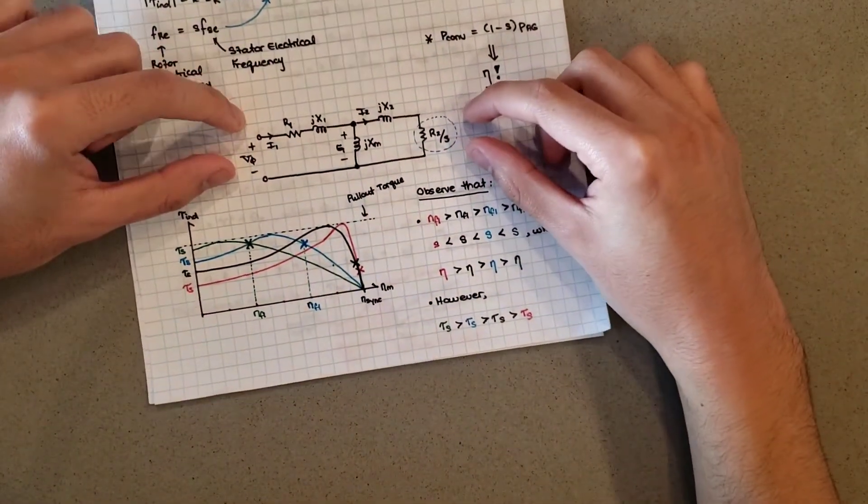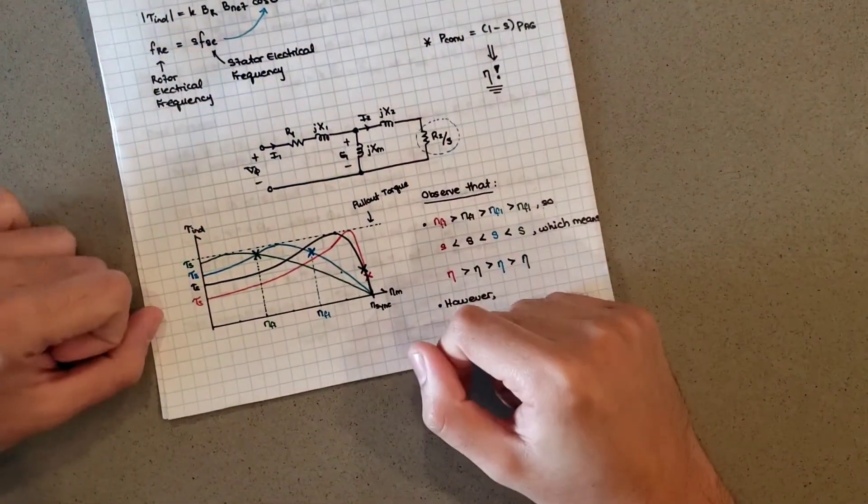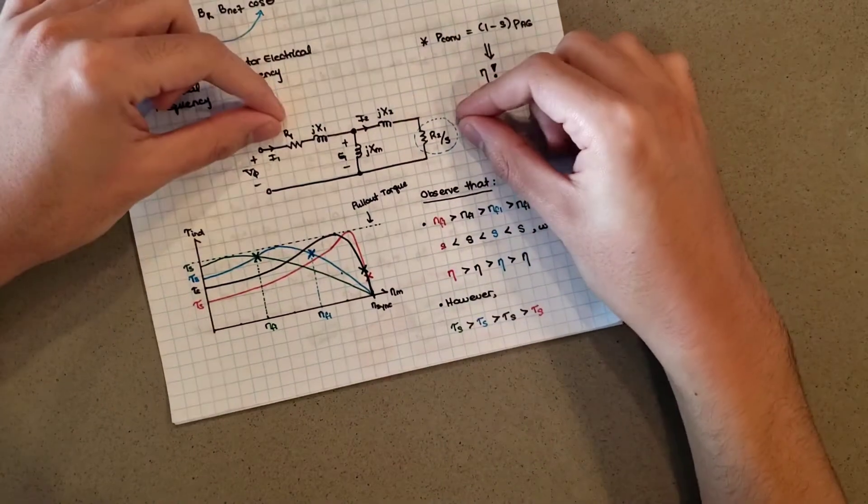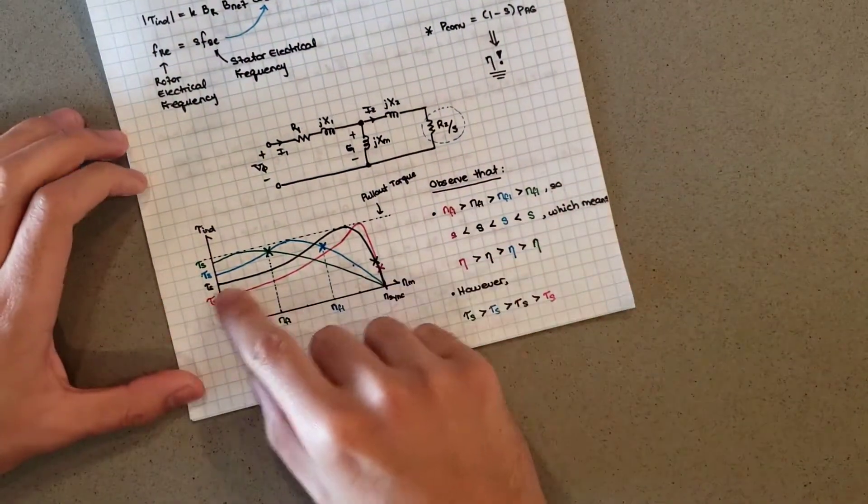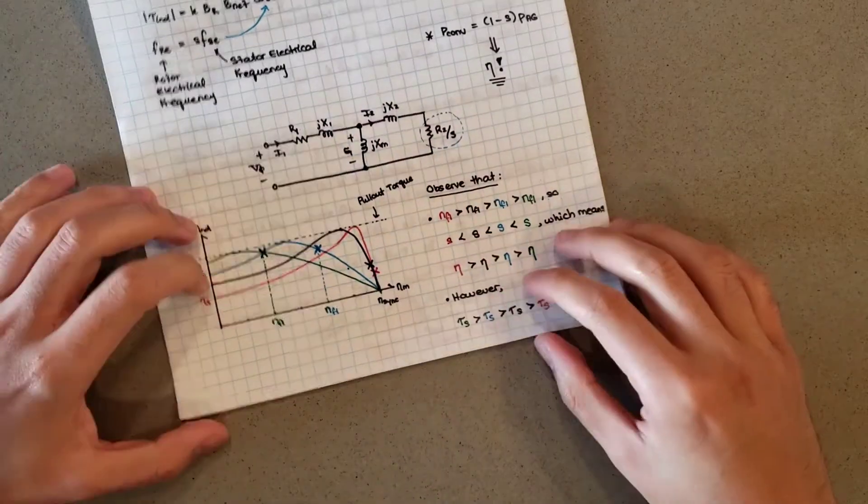A really cool thing is if you knew the parameters of your induction motor - say you just found an induction motor out there and you did some tests and you got these values - you can actually take these values and calculate what the torque-speed curve of your motor is going to be, and it's going to be decently accurate when you do it.